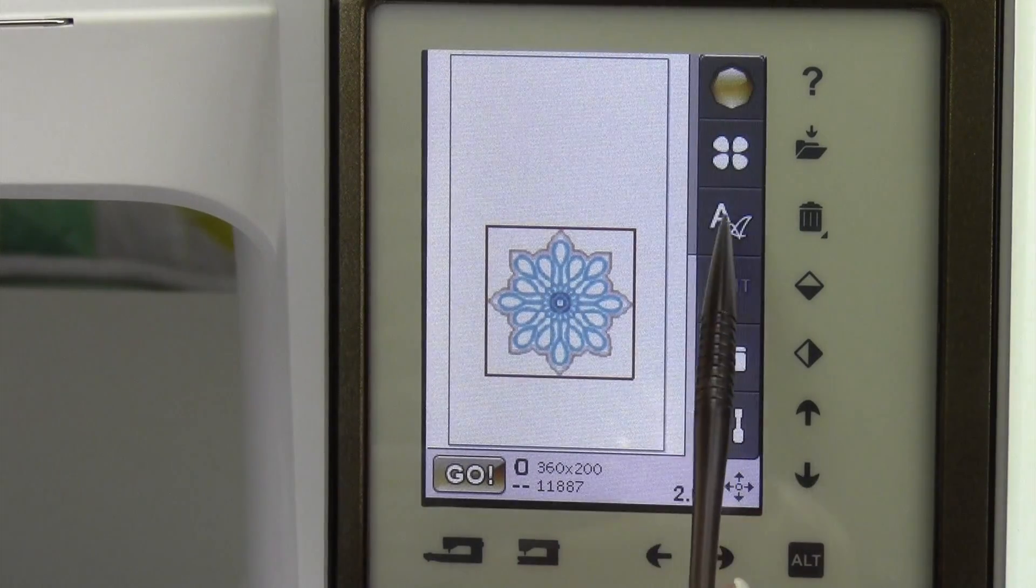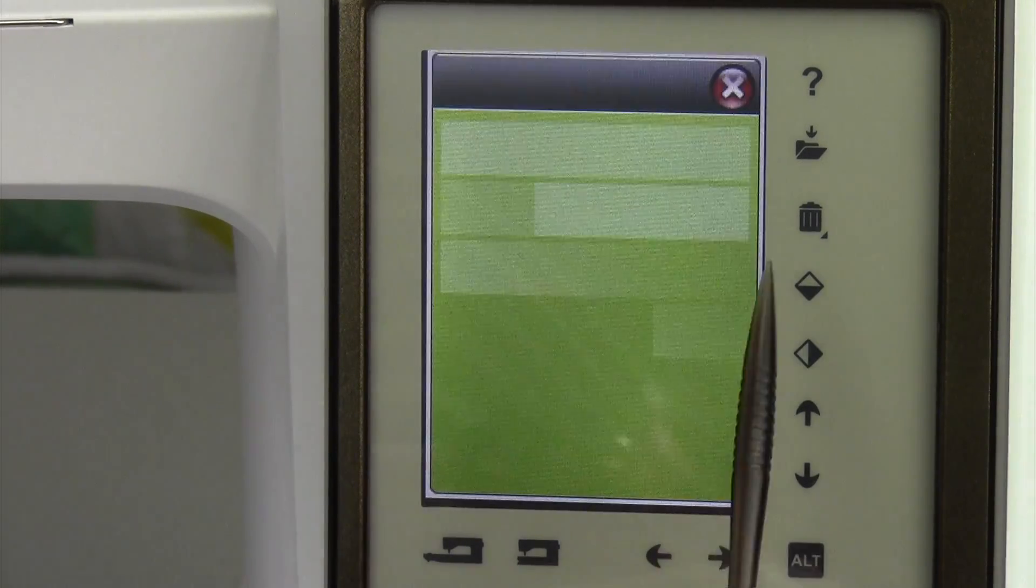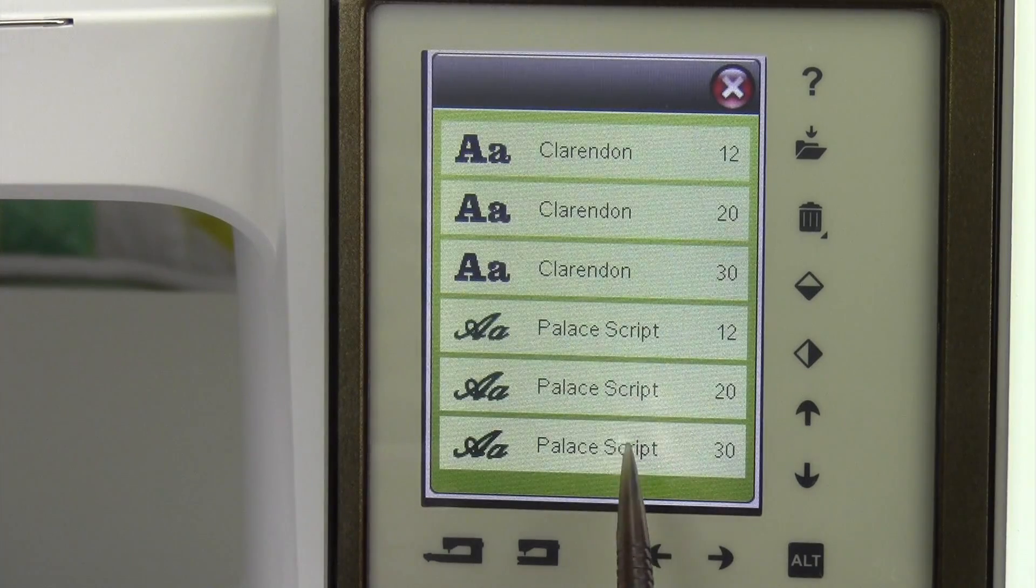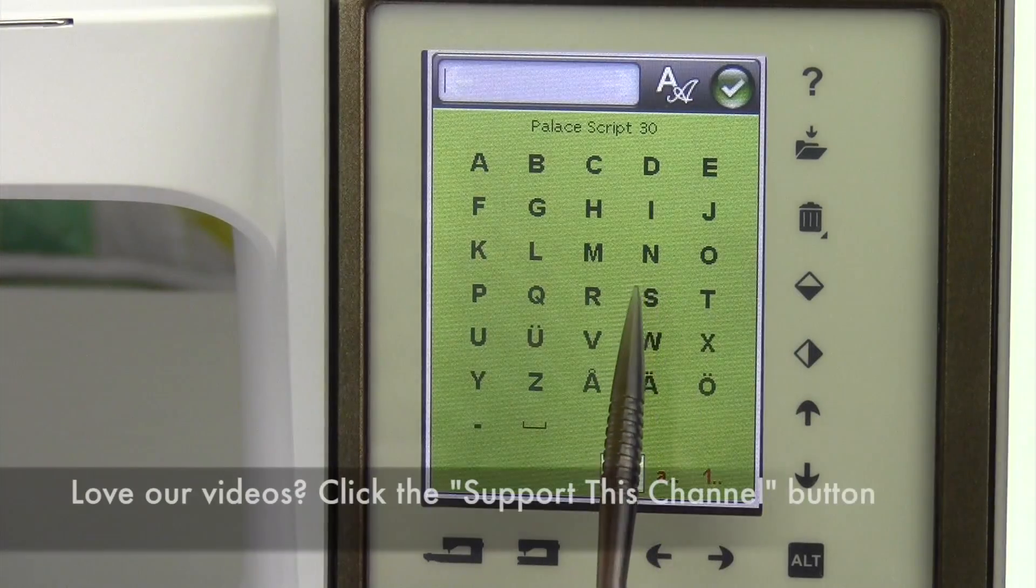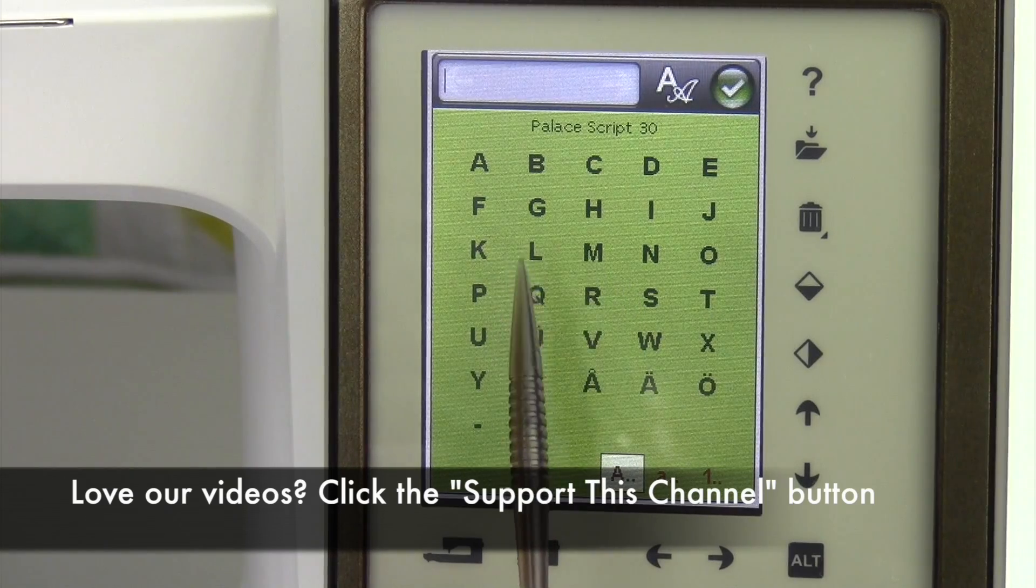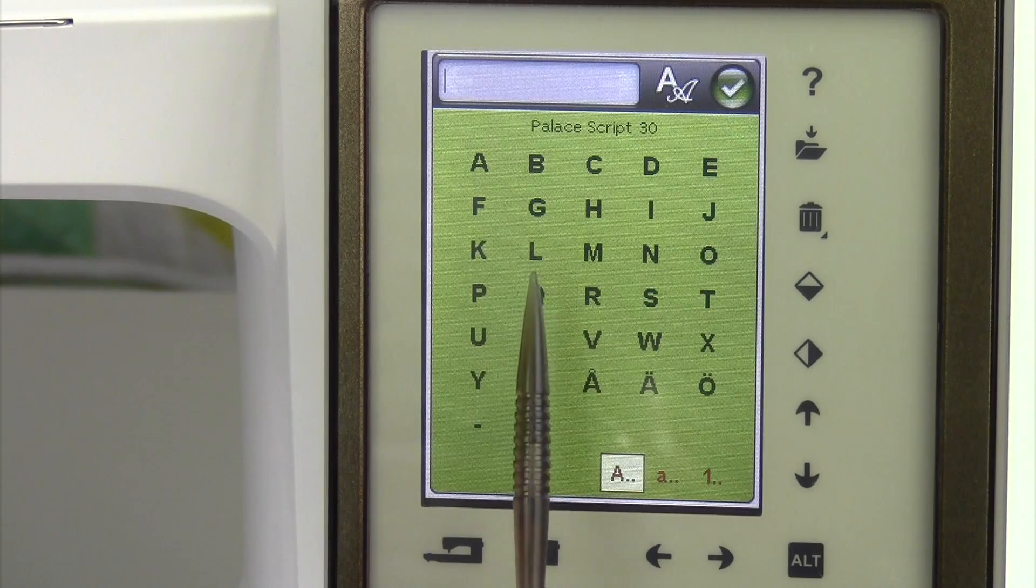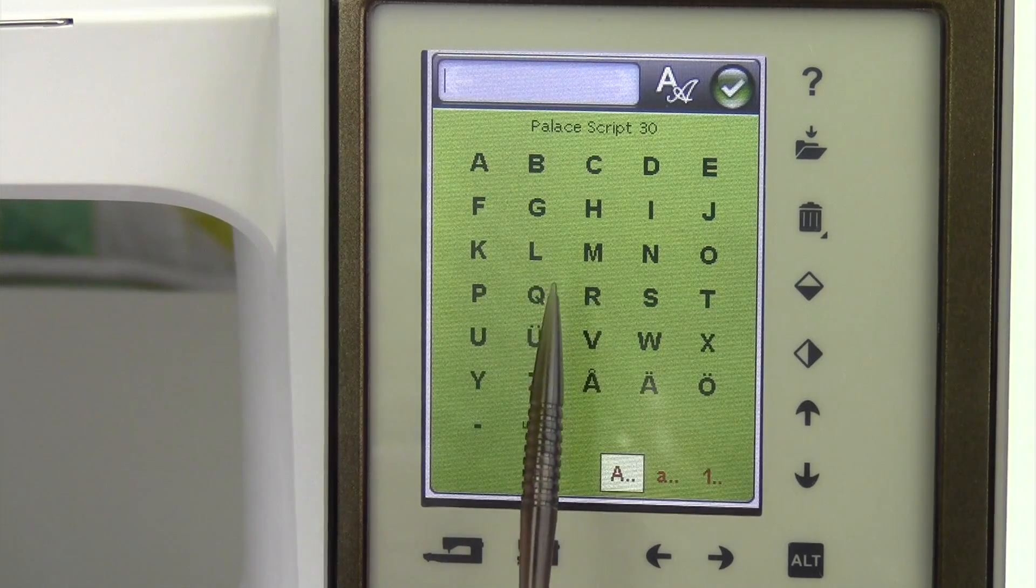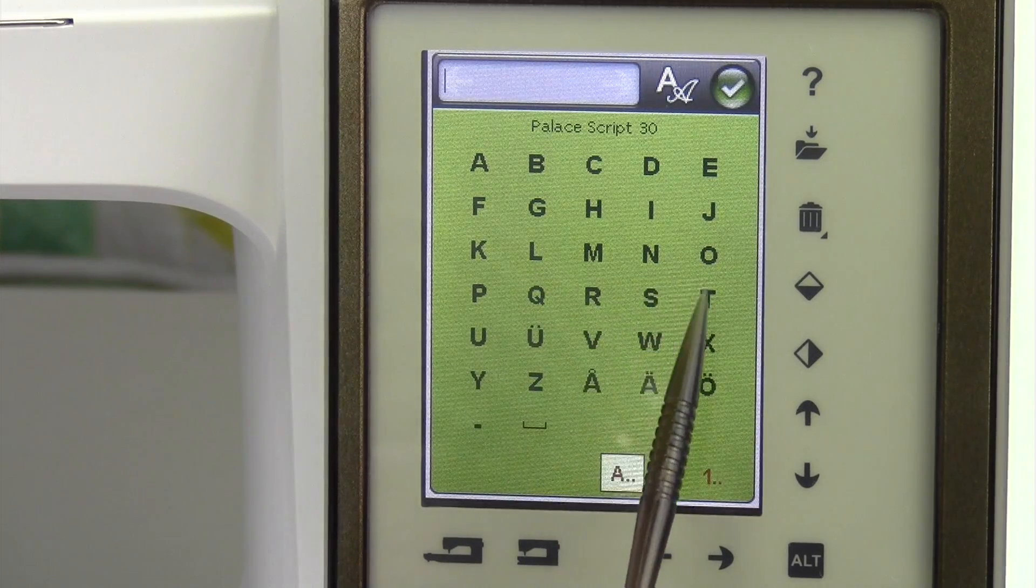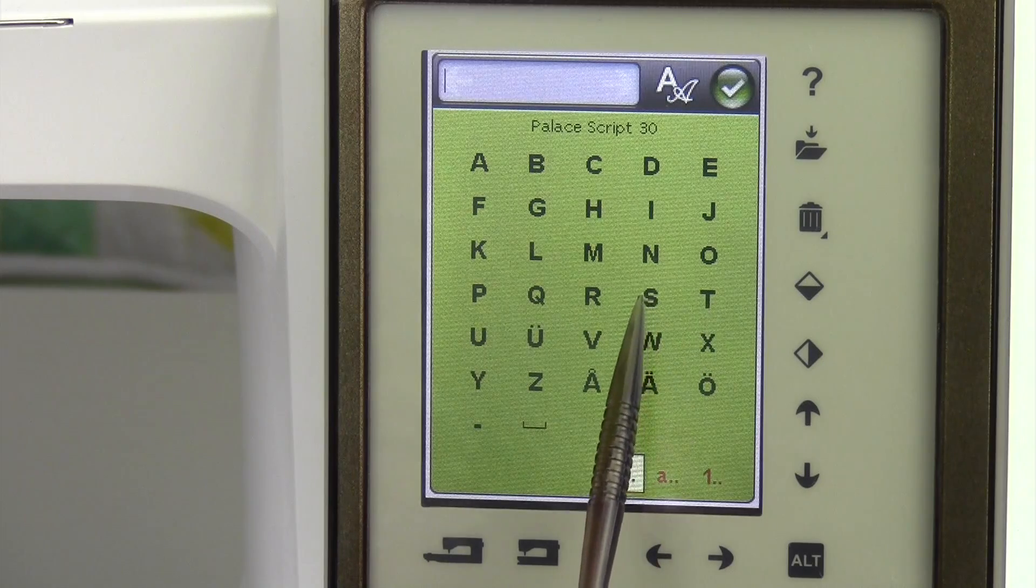We're going to come up here and pick our alphabets. I want to do the palace script in the largest size. If you want more alphabets, remember you have the quick font option. It's a free download from Husqvarna Viking's website. You'll want to click here to find that video and how to do that. I'm going to just go ahead and do an S.